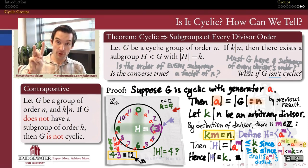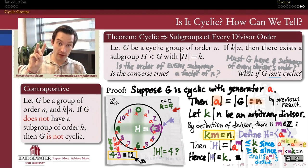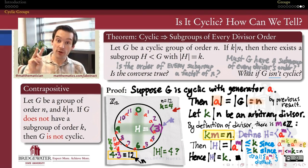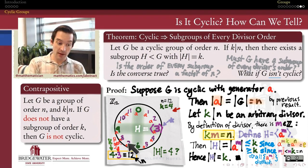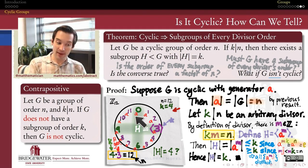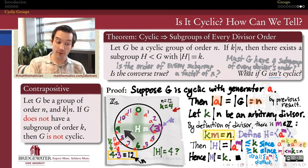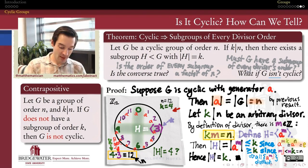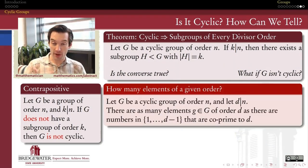3, meanwhile, is co-prime to 4. Therefore there are two numbers between 1 and 4 minus 1 that are co-prime to 4, so there would be two choices for elements of order 4 inside this group. One of those choices is the one we already saw — the number 3 is an element of order 4. But there's another choice: namely, the element 9 is also an element of order 4 in this group. Two different elements of order 4, because there are two numbers less than 4 that are co-prime to 4.